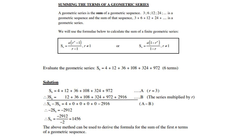For example, 3, 6, 12, 24 is a geometric sequence, so 3 + 6 + 12 + 24 + ... is a geometric series. It is geometric because there is a common ratio: 6 ÷ 3 = 2, 12 ÷ 6 = 2, 24 ÷ 12 = 2, so the common ratio r = 2.